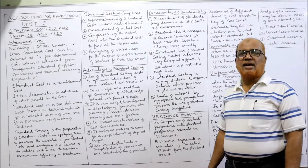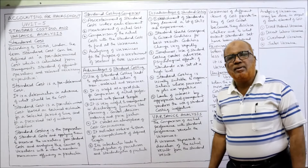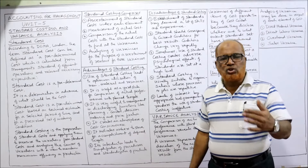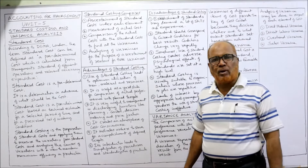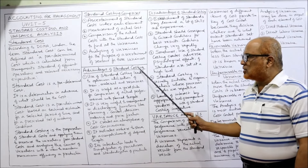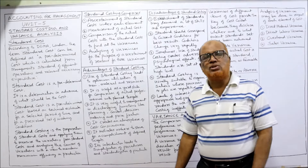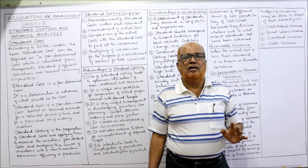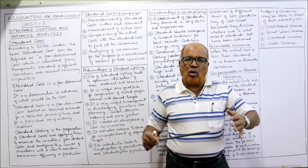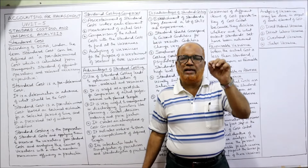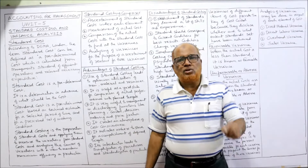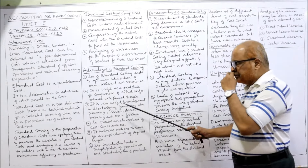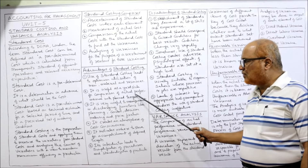Now, advantages of standard costing. In an examination you may get a theory question regarding explaining standard costing and its advantages and disadvantages. The first advantage: the use of standard costing leads to optimum utilization of men, material, and resources. A business is successful only when it utilizes all the resources efficiently — men, material, machines, and all facilities. Standard costing helps in efficient utilization of all the resources.